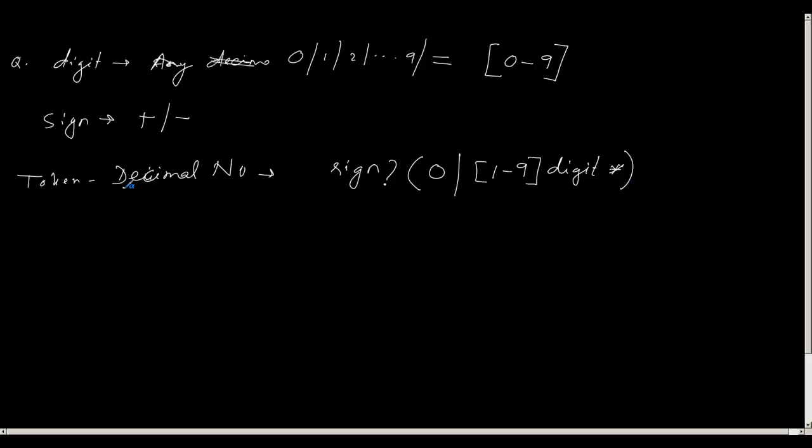So a decimal number, I can start with a sign plus or minus, or I may not start with a sign. That is why I have put a question mark, 0 or 1 occurrence. I cannot have multiple occurrences of sign. Then, a number can be either a 0, plain 0 or it can be a single digit number that is 1 to 9 or it can be double digit numbers that is 1 to 9 followed by digit star. So this way we represent the regular expression for the token decimal number.